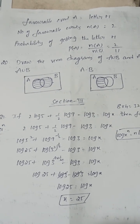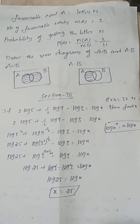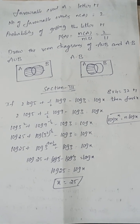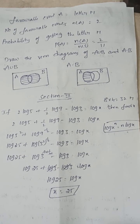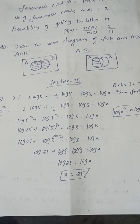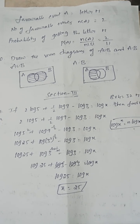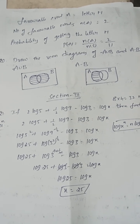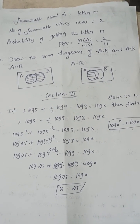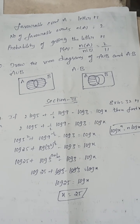Section 3, 4-mark questions. Find x if 2log5 + ½log9 − log3 = log x. Using the law of logarithm — log x^n = n log x — rewrite as log 5² + log 9^(1/2) − log 3. Since 9 = 3², we get log 25 + log 3 − log 3 = log x. The log 3 terms cancel, so log 25 = log x, therefore x = 25.